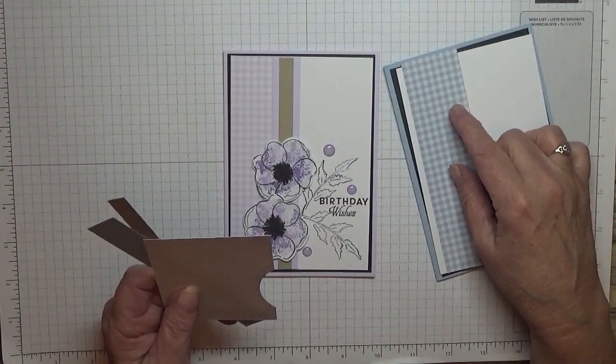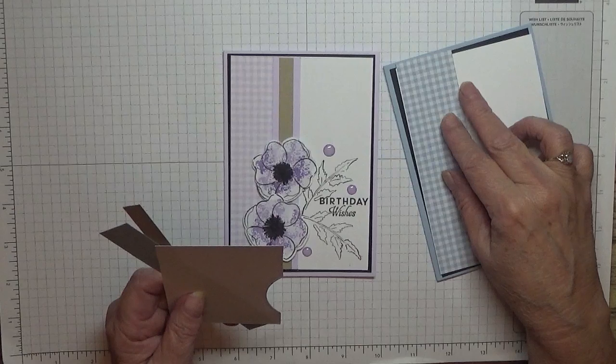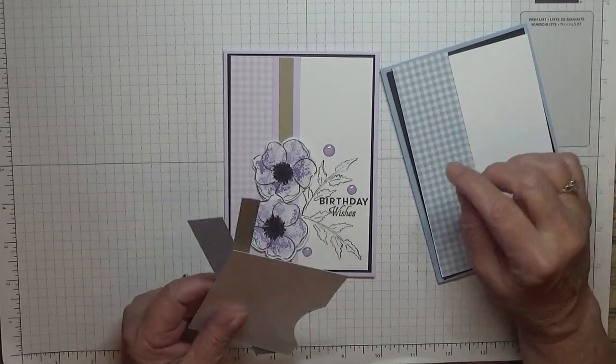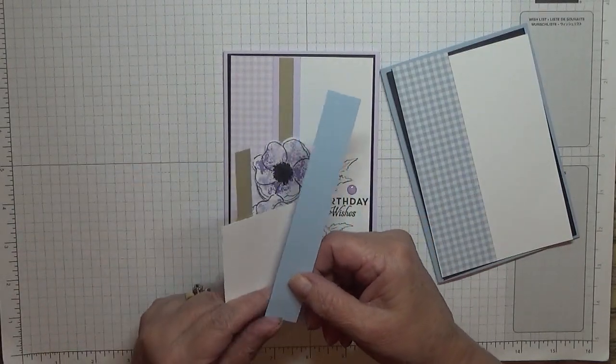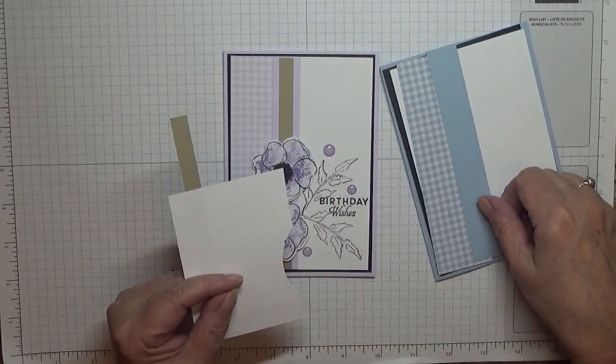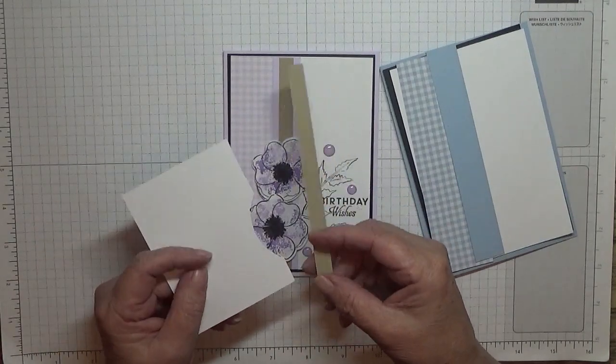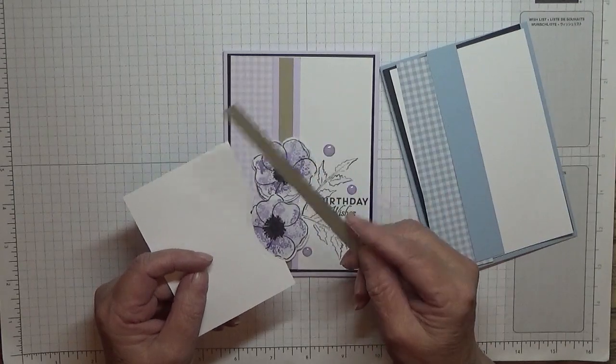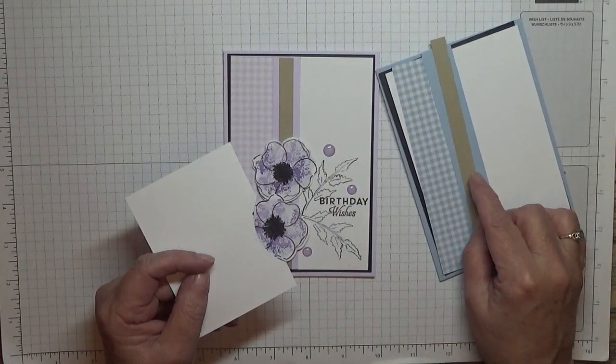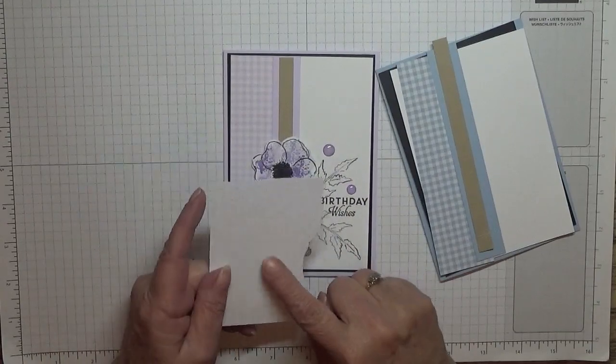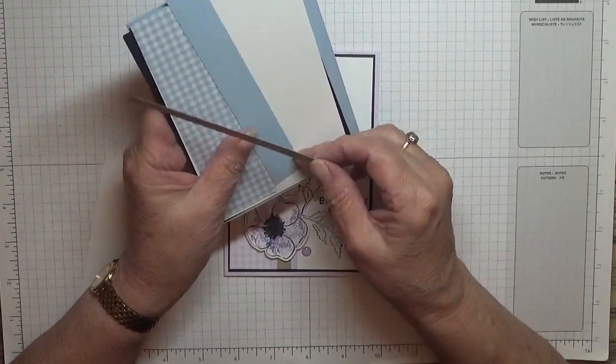I have a strip of the gingham paper at five and a half by one and a half, but it'll need trimming down. Also have a piece of Seaside Spray at three quarters of an inch by five and a half that'll need trimming, and I've also got a piece of Crumb Cake at three quarters of an inch by five and a half, and some scrap for the flowers.